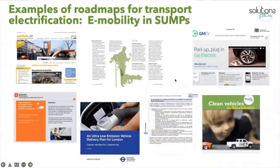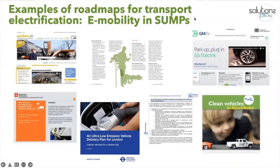What you see here are examples of roadmaps for transport electrification in sustainable urban mobility plans. You can look at examples from Barcelona, London, and the Netherlands, where you will see some of the strategies and roadmaps that decision makers have adopted in these cities.